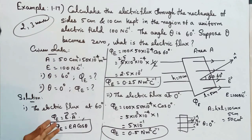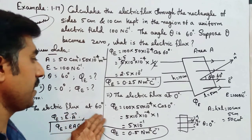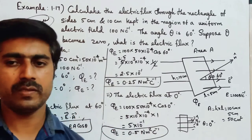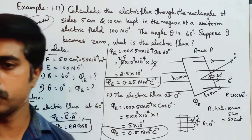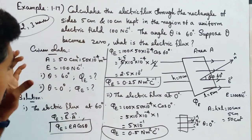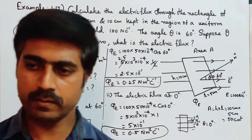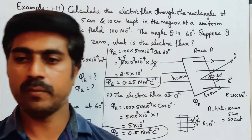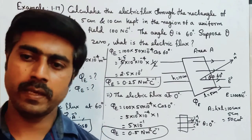So the electric flux at 60 degrees is 0.25 newton meter squared coulomb power minus 1, and the electric flux at 0 degrees is 0.5 newton meter squared coulomb power minus 1. This problem can come as a 2 mark, 3 mark, or even 5 mark question.